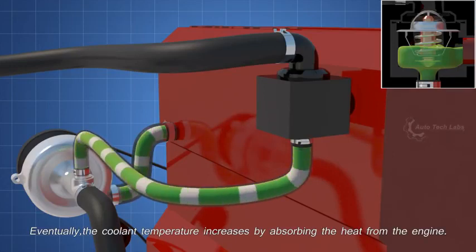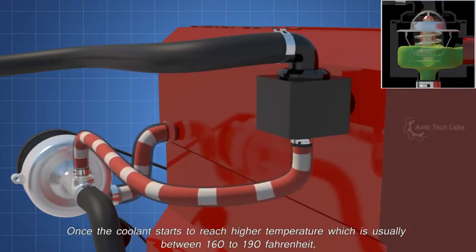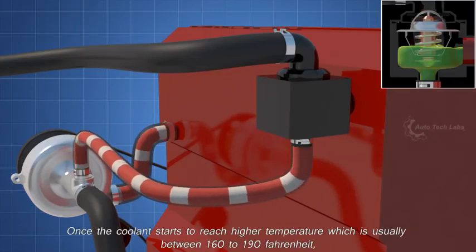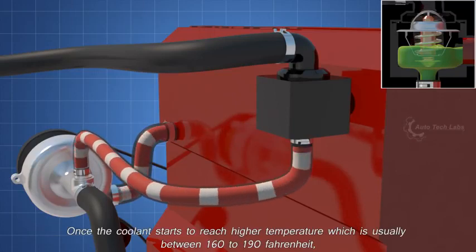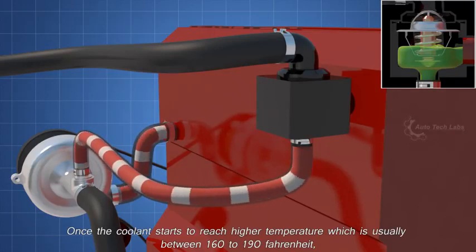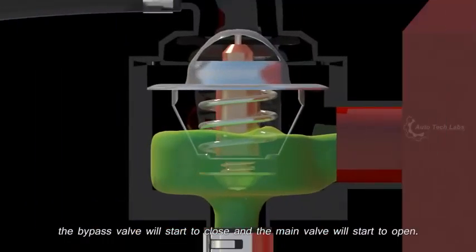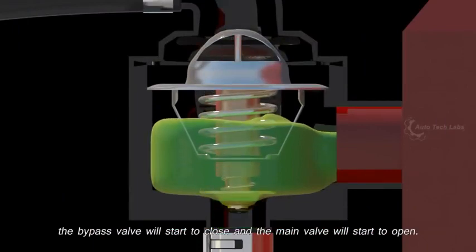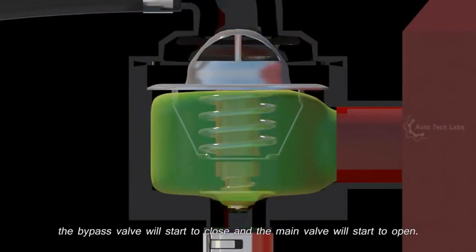Eventually, the coolant temperature increases by absorbing the heat from the engine. Once the coolant starts to reach higher temperature, which is usually between 160 to 190 Fahrenheit, the bypass valve will start to close and the main valve will start to open.